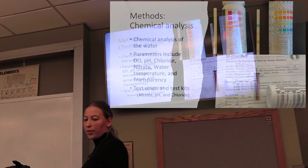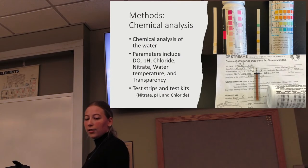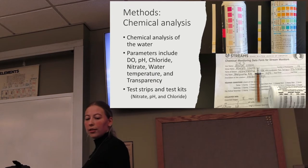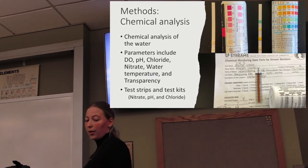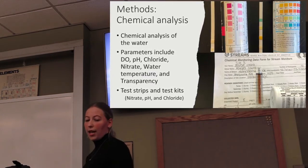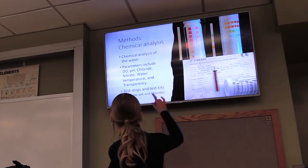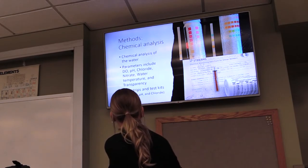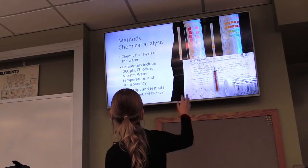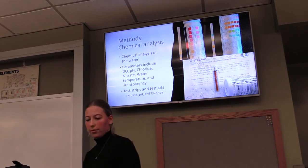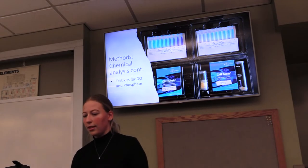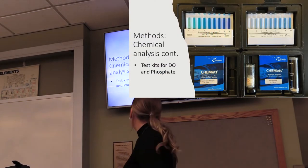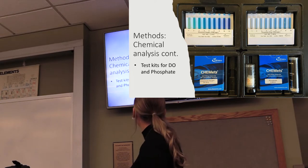The last section of my methods was the chemical analysis. The parameters we sampled were dissolved oxygen (DO), pH, chloride, and nitrate. We also recorded the water temperature and transparency at each site. On the top you can see the test strips we used for nitrate and pH, and the bottom one is the chloride test strip sitting on one of the Save Our Streams sheets. These are the test kits used for dissolved oxygen and phosphate at each site.